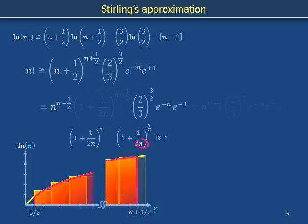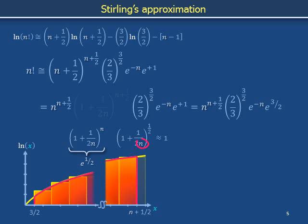As n becomes large, the square root of 1 plus 1 over 2n becomes arbitrarily close to the square root of 1, which is 1. In the other term, n becomes very large both in the denominator within the binomial and in the exponent, so this factor approximates e to the 1/2 power. Multiplying all factors together and adding the power of 1/2 in the factor e to the 1/2 to the power 1 in the factor e to the 1, we find that n factorial is approximated by n to the n plus 1/2, times 2/3 to the 3/2, times e to the minus n, times e to the 3/2.